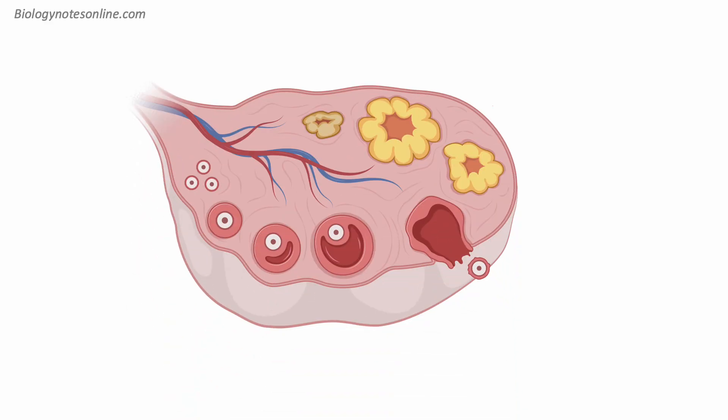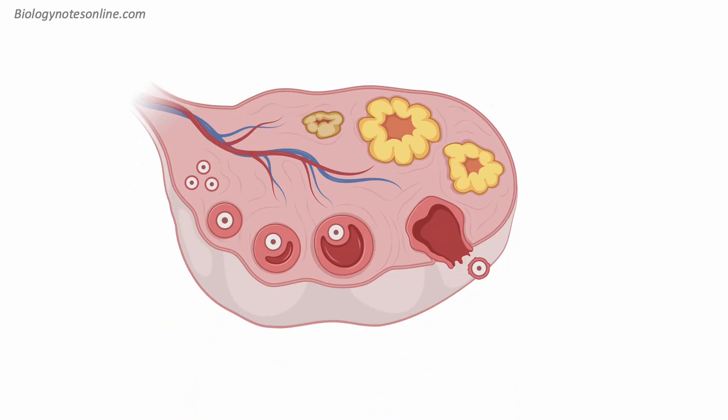The ovary is an almond-shaped organ located on either side of the uterus. It's made up of two main parts: the outer cortex and the inner medulla. The cortex is where the magic happens — it contains thousands of tiny structures called follicles.